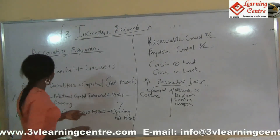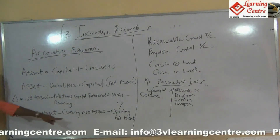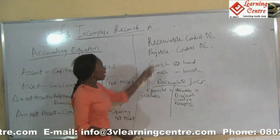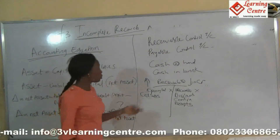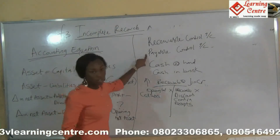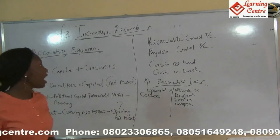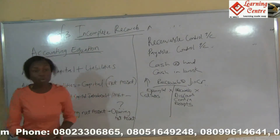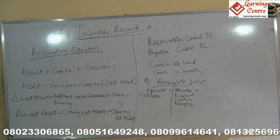Just like we used all our information to get our opening net assets, if we have another piece of information we don't know, we use all the given information to find what we want. If it is credit sales, we use the receivables ledger. If it is credit purchases, we use the payables control account. For the cash account, you can determine how much has been paid to suppliers or received from customers, bank charges, or drawings. It depends on what the question asks.